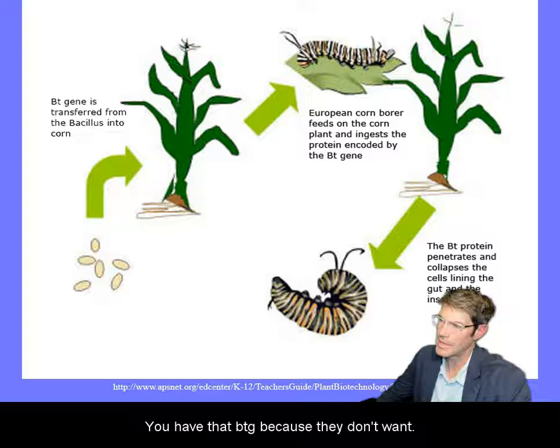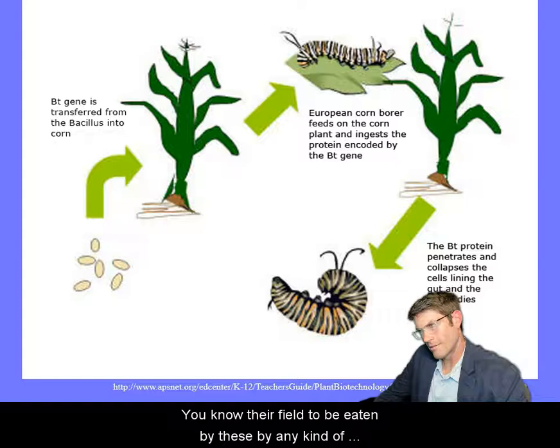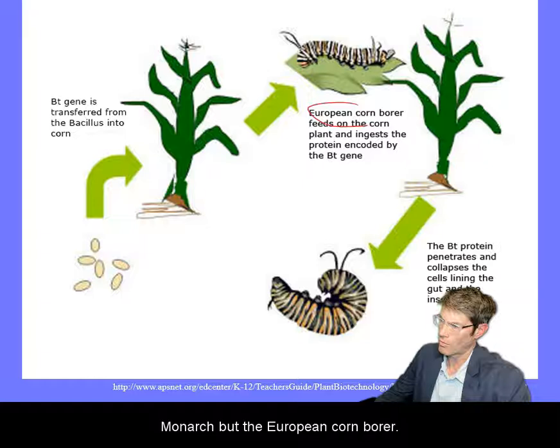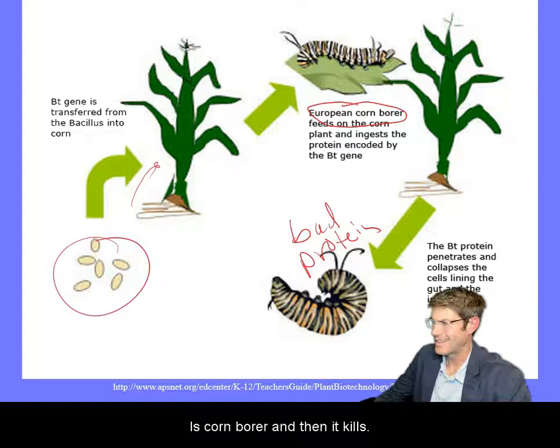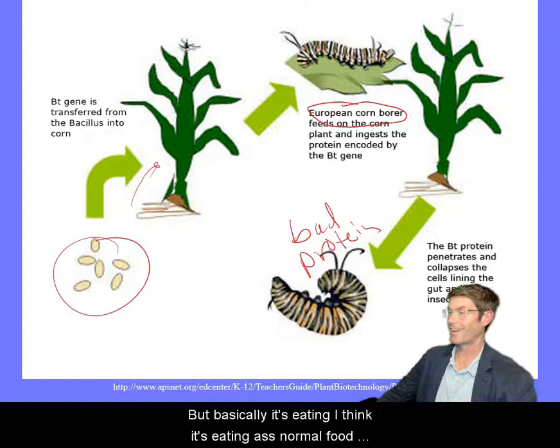The BT gene is in the corn because farmers don't want their fields eaten by larvae. What they're really worried about is not the monarch but the European corn borer. The corn borer eats the plant, ingests the BT protein, and that protein destroys its gut from the inside — basically it's eating what seems like normal food but is actually a poison.